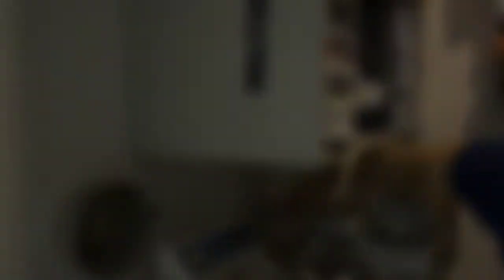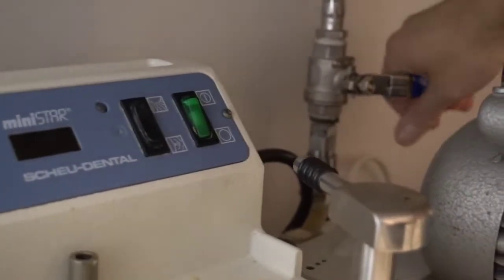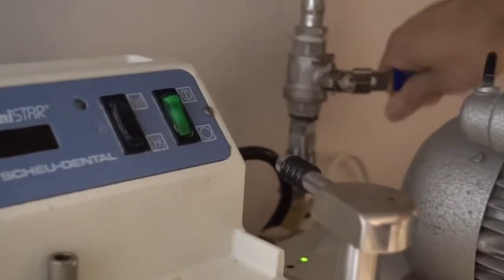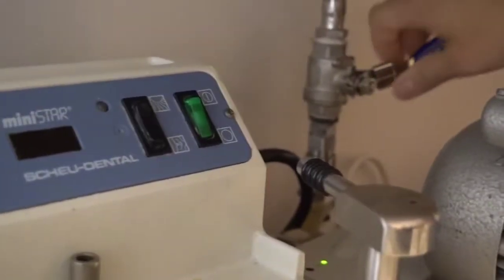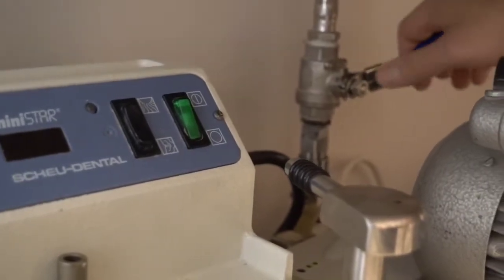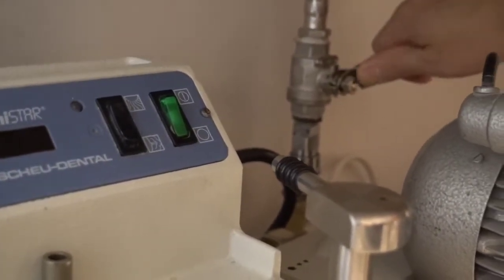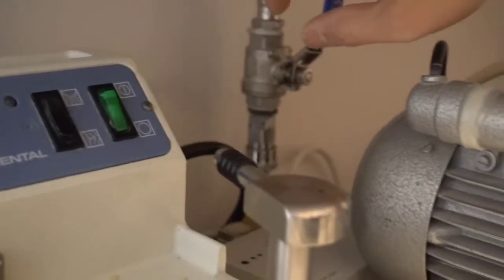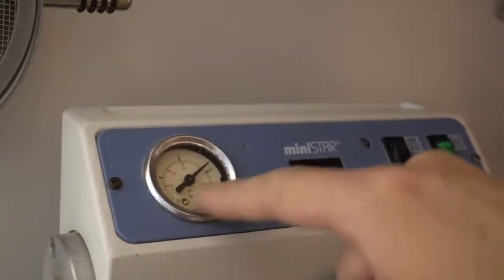First step, make sure that the pressure valve is open. Right now, this is in its closed position. It's got a lock that prevents it from being open. So to unlock it, you lift off the latch and allow it to be open. Once it's open, the pressure gauge goes from zero to any number.